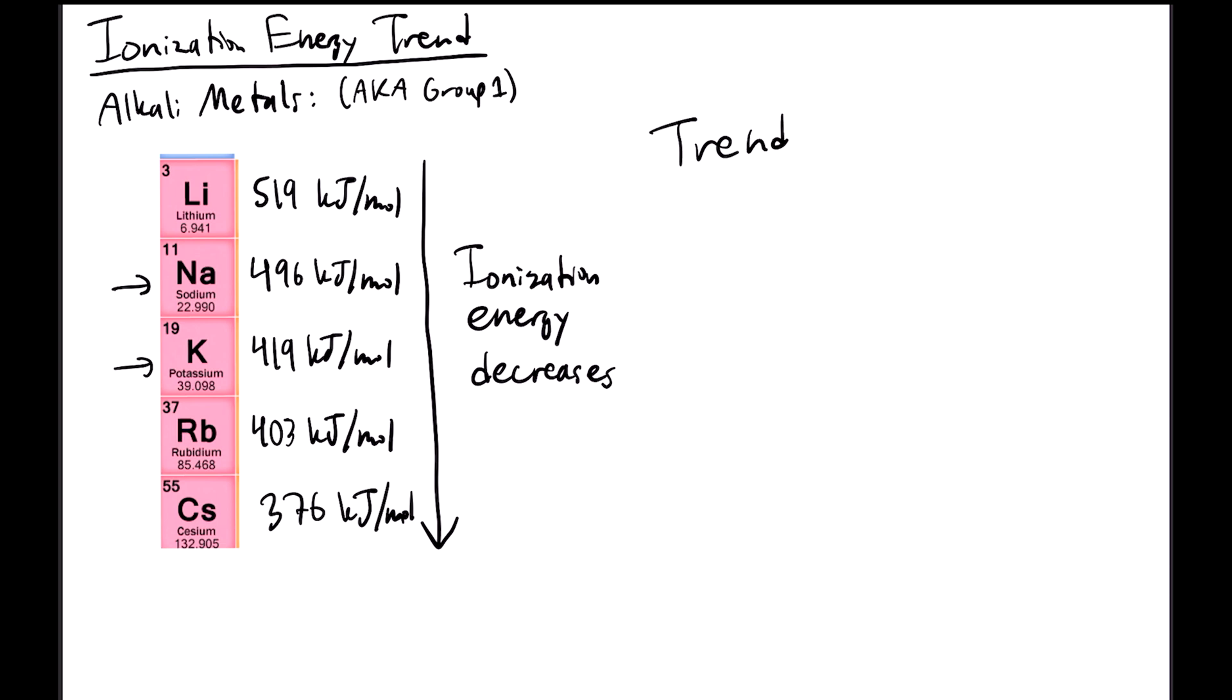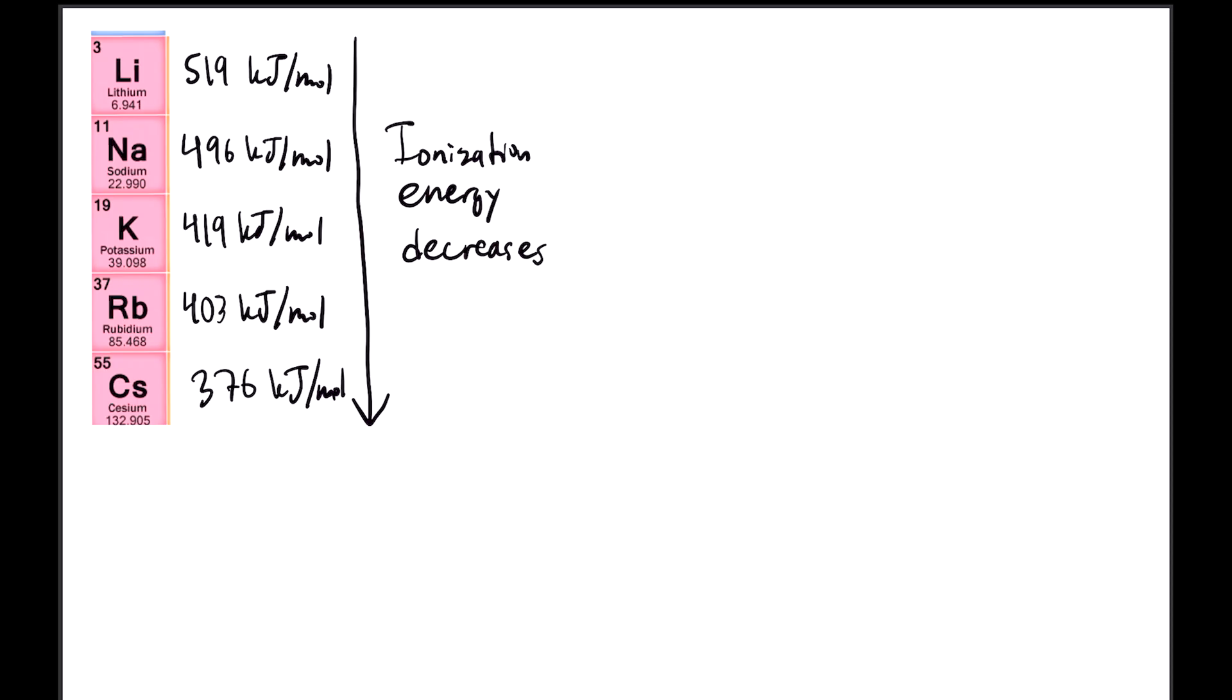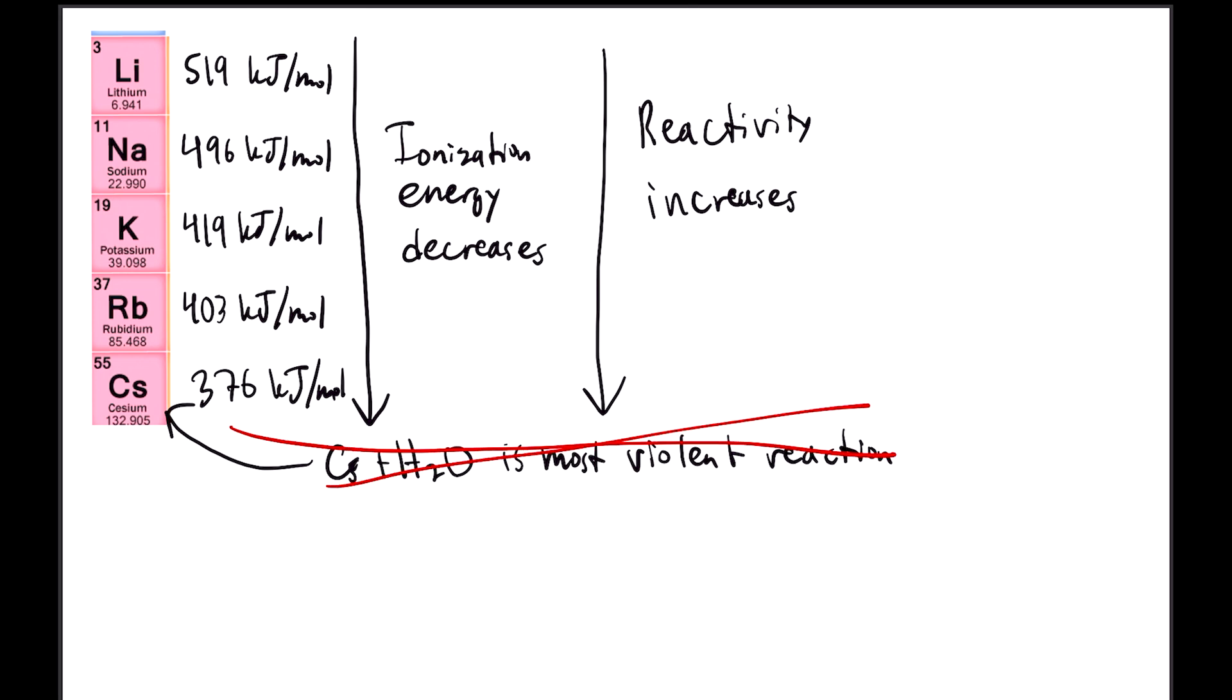What's even cooler is that this trend of ionization energy decreasing down columns or groups is generally true for the whole periodic table. Just one of the many wonders of chemistry. Because ionization energy decreases down the column of alkali metals, the elements become increasingly more reactive, meaning that the reaction of cesium with water would be the most violent. That is, if that was the last element in the group.